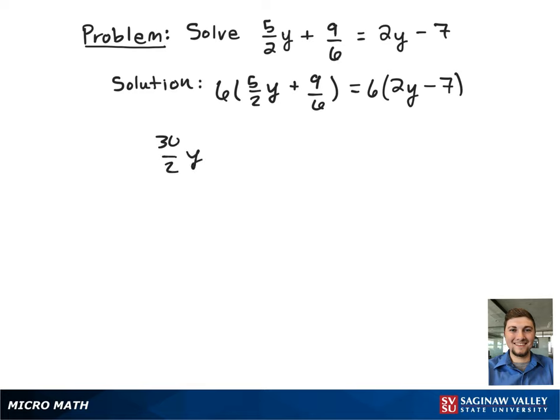This gives 30 halves y plus 45 sixths equals 12y minus 42. We then reduce the left hand side as those fractions are actually whole numbers. This gives 15y plus 9 equals 12y minus 42.